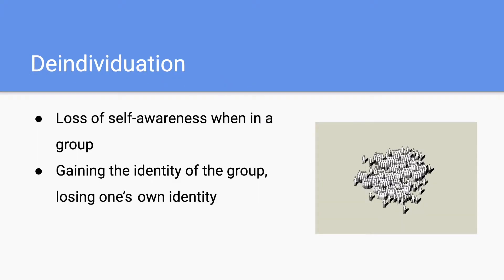Our first one is deindividuation, and this is the loss of self-awareness when in a group. Essentially when people are in big groups, they tend to lose their own self-identity and they adopt the identity of a group.